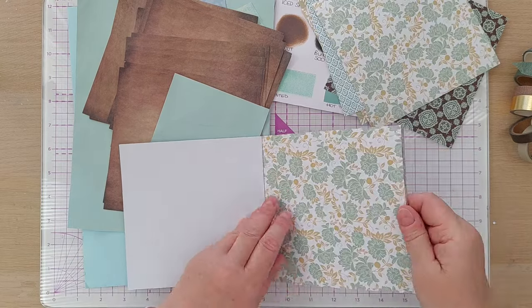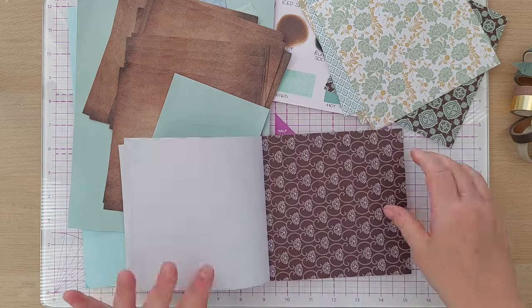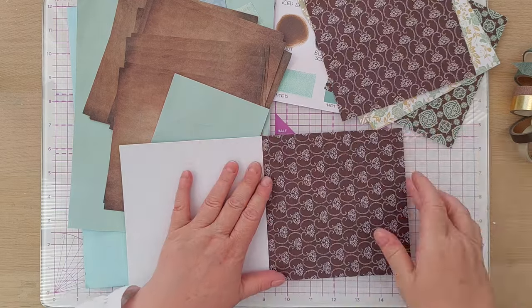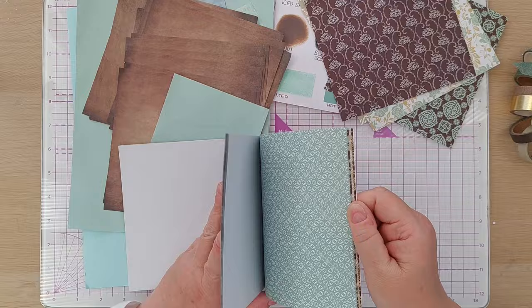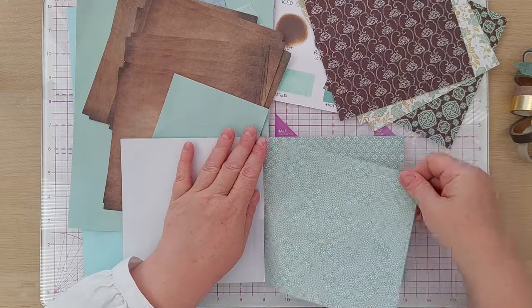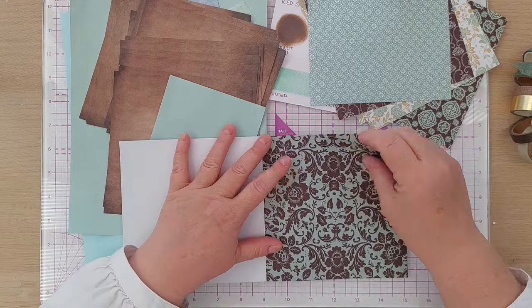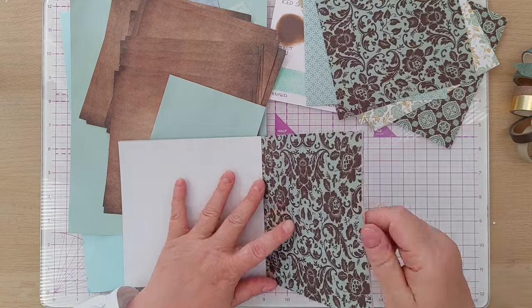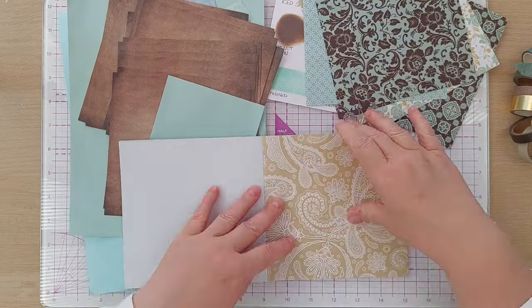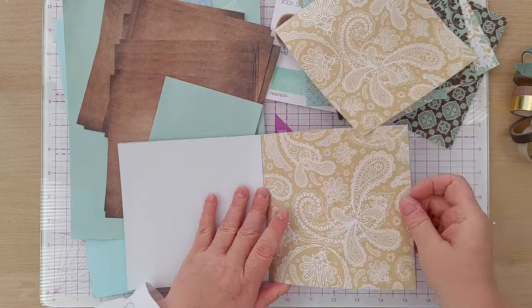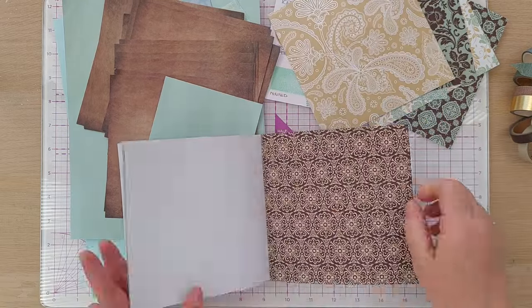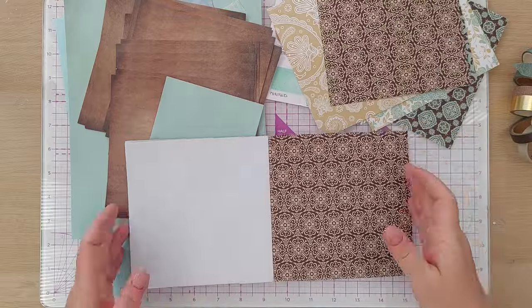To get going I pulled out one of each pattern from the paper pad just so I could get a feel for the kind of colors and patterns that are in it. I also pulled a couple of solid-ish papers from my project pack. I chose a minty green one and the dark brown you can see to the top left of the screen.